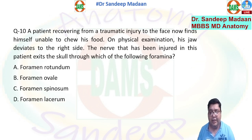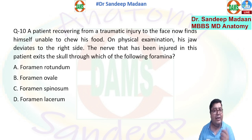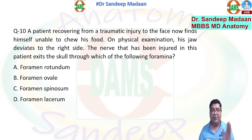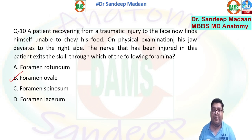A patient recovering from traumatic injury to the face finds himself unable to chew food. We identify the motor deficit: inability to chew is a problem with mastication, which is done by the muscles of mastication supplied by the mandibular nerve. The question asks which foramen this nerve passes through. The answer is the foramen ovale, because the mandibular nerve passes through the foramen ovale.